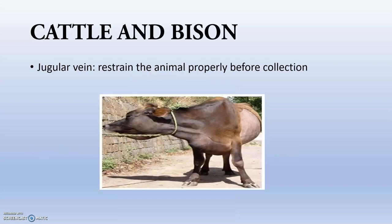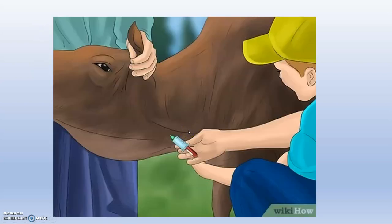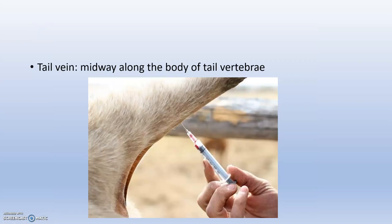For cattle and bison, we use the jugular vein. We should restrain the animal properly before collecting the blood, and the jugular vein will be easily visible. We also use the tail vein — located along the midline of the tail vertebrae.